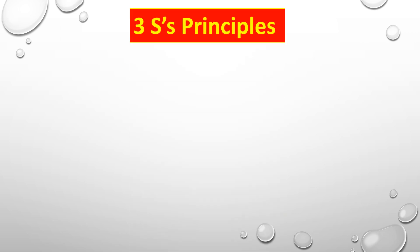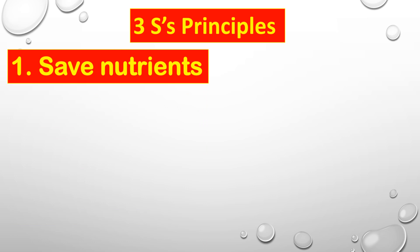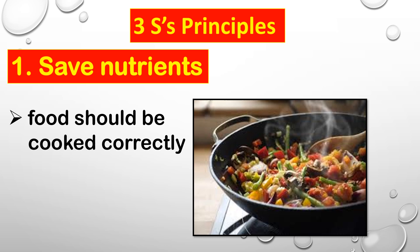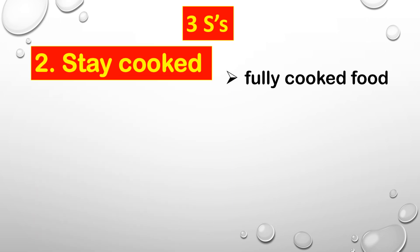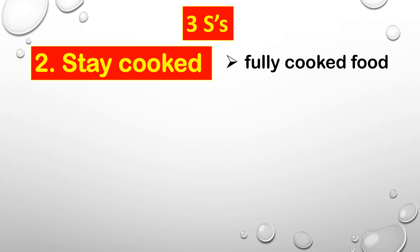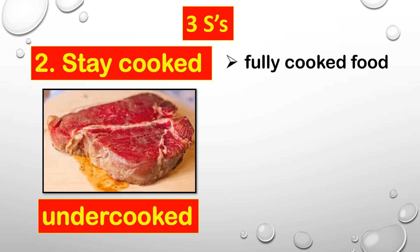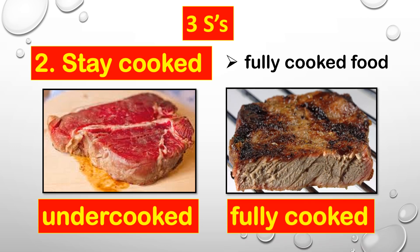Aside from the three B's, we also have the three S's principles. The first S is save nutrients — food should be cooked correctly. For example, you need to mix the vegetables well when cooking. The next S is stay cooked — foods should be fully cooked. For example, steak that is undercooked is not the right color; the fully cooked steak is brown or dark brown and is ready to eat.